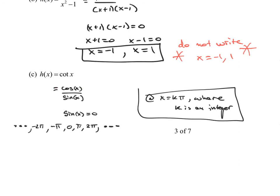So those are the values when sine of x is equal to 0. And sine of x equals 0 would be the denominator of cotangent, making cotangent undefined. So anytime you're looking for a vertical asymptote, try to factor and simplify first, then set the denominator equal to 0.